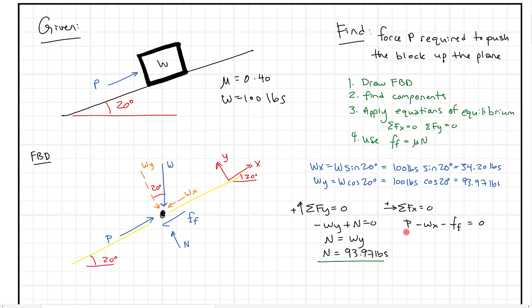But if you'll remember, we have to use this equation up here to figure out what the force of friction is. If we write in the force of friction, this is going to equal mu times N, which equals 0.4 times 93.97 pounds. When I solve it, I get 37.59 pounds for the friction force.